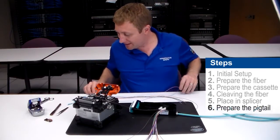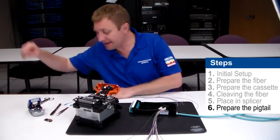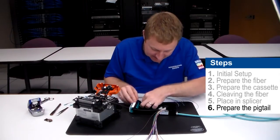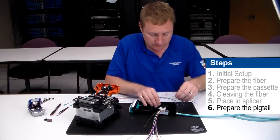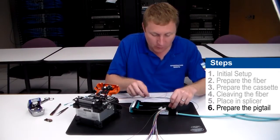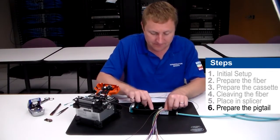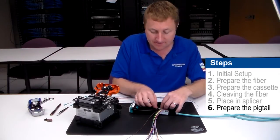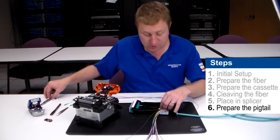So now we're ready to prepare our pigtail. I'm going to again take my brown fiber, move my dust cap and we're going to check for length. There is only one way I can wrap this around. I'm going to want to make sure I do at least one loop in my slack manager and in this case I'm going to have to trim it.